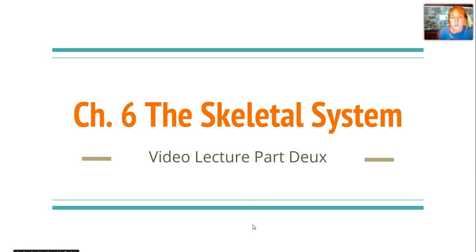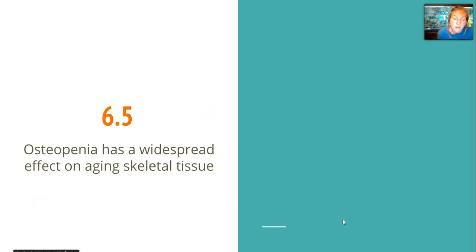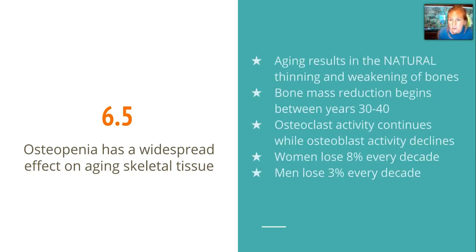Carlson here to carry on the Chapter 6 video lectures. This is Part 2 of the skeletal system and we are going to pick up where we left off, which is at Section 5. This talks about a problem that occurs as we get older: osteopenia. It is a natural thinning and weakening of the bone, and that is the definition of osteopenia.